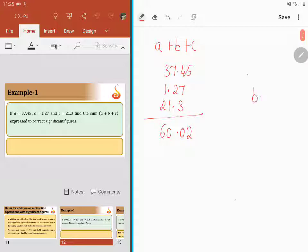If I take value of b, this is 1.27. This is expressed up to two decimal places. If I take value of c, this is 21.3. This is expressed up to, or reported up to, first decimal place.